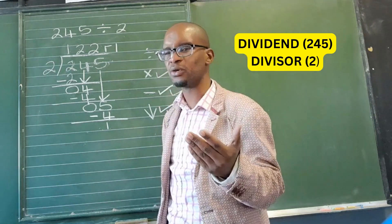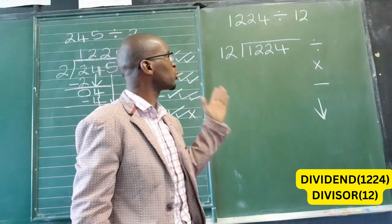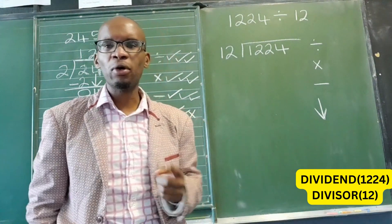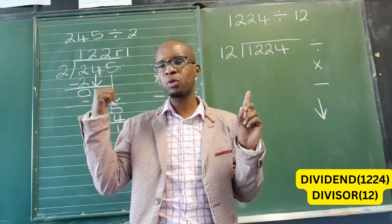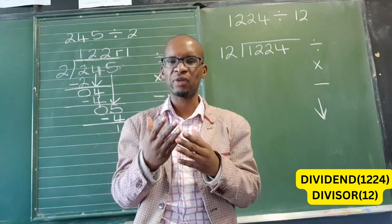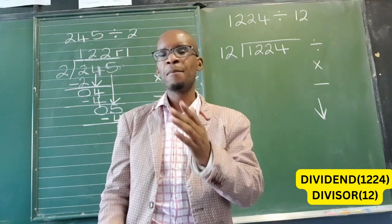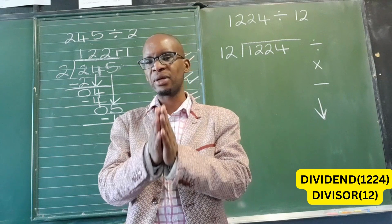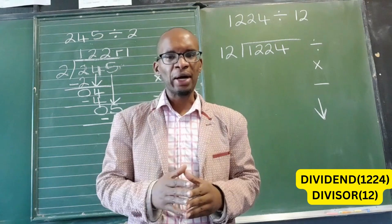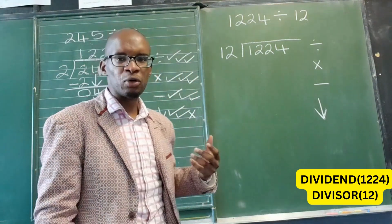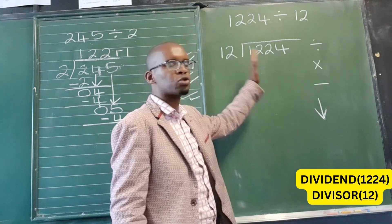Let's take a look at the next problem. The second problem is 1224 divided by 12. The only difference between this problem and the previous one is that this problem has a two-digit divisor, but the rules and steps remain the same — divide, multiply, subtract, bring down. We want to know how many times does 12 go into 1224.